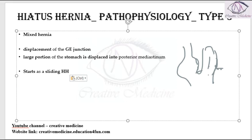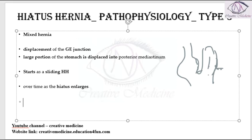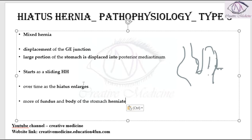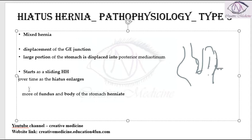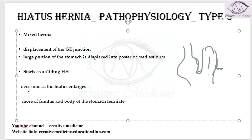It starts as a sliding hernia first. Over time the hernia enlarges, and once enlarged, the fundus and the body of the stomach also herniate into the thorax, resulting in a mixed paraesophageal hernia, or mixed hernia.